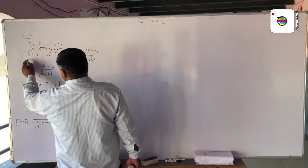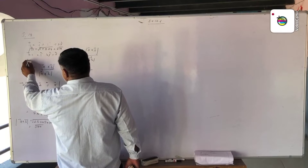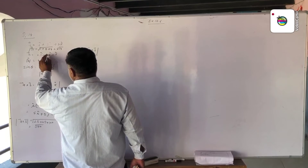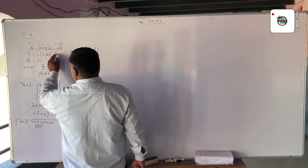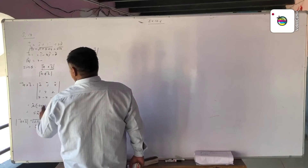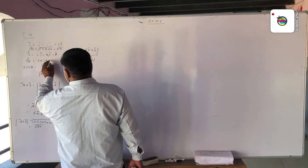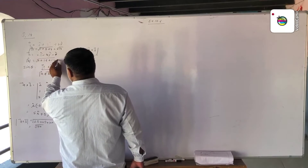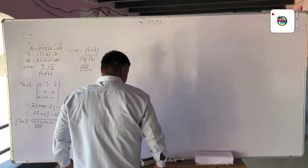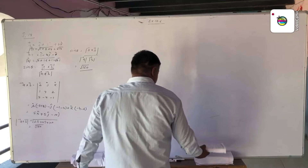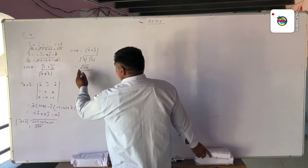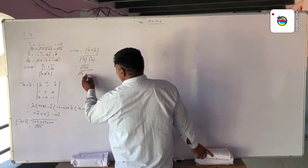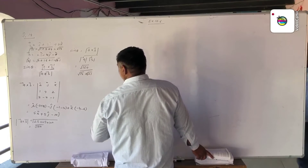The magnitude of vector B is the square root of 2 squared plus 4 squared plus 1 squared, giving us 4 plus 16 plus 1, which is the square root of 21. So sine theta equals the square root of 150 divided by the square root of 14 multiplied by the square root of 21.